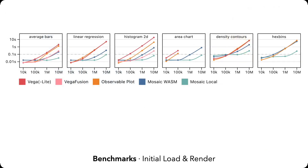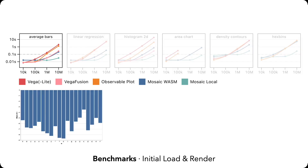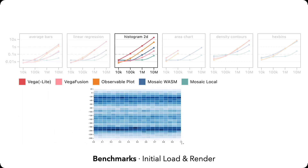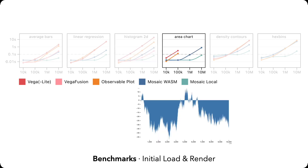To evaluate scalability, we conducted performance benchmarks comparing Mosaic variants to Vega, Vega Fusion, and Observable Plot. Mosaic provides order of magnitude improvements for the initial rendering of aggregated bars, linear regression plots, two-dimensional histograms, and area charts.